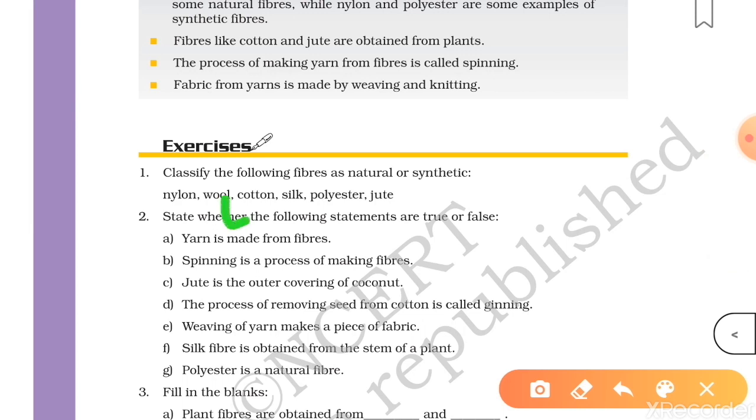Your wool, cotton, silk and jute, these are natural. While nylon and polyester, they are synthetic.